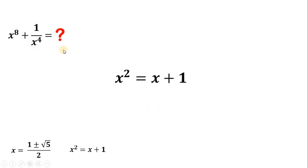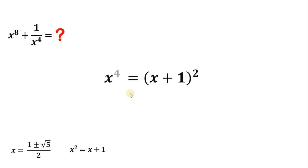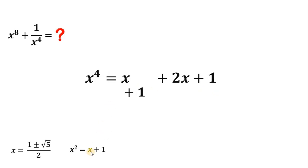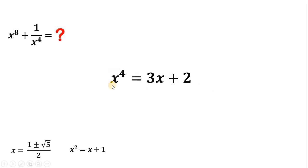To get the value of x raised to the fourth power, let's square both sides. We have x squared quantity squared equals x plus 1 quantity squared. x squared quantity squared is just x to the fourth power, and x plus 1 squared is x squared plus 2x plus 1. Since x squared equals x plus 1, we substitute: x plus 2x is 3x, and 1 plus 1 is 2. Therefore, x raised to the fourth power equals 3x plus 2.